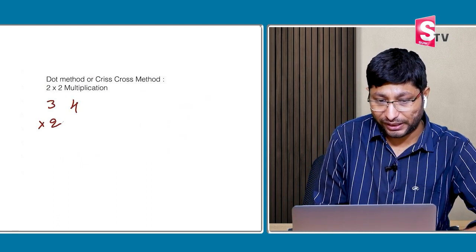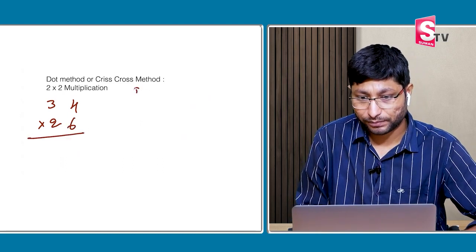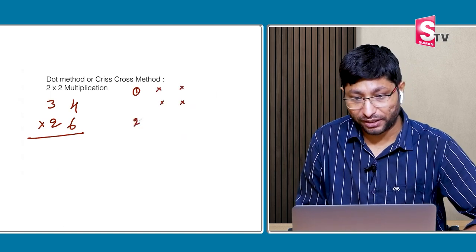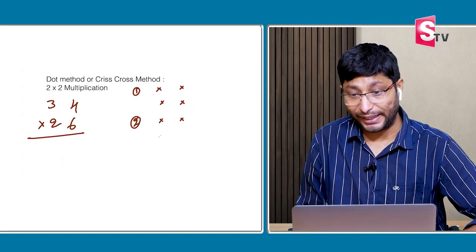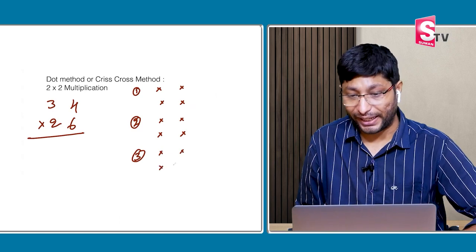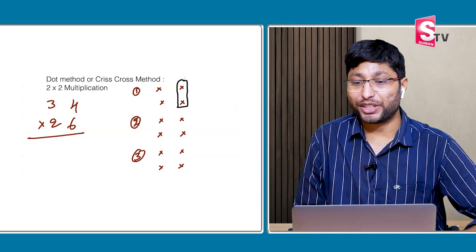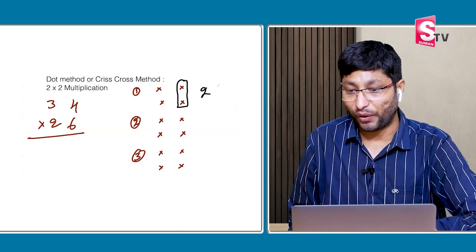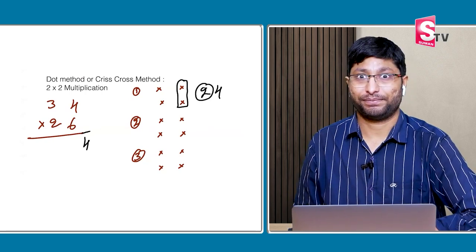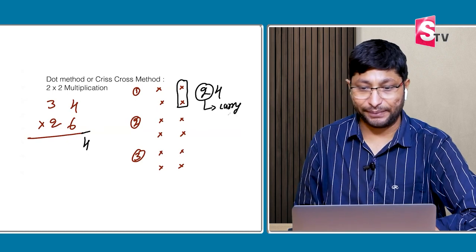Next question: 34 multiplied by 26. I will explain this problem also in steps. From the next problem onwards I won't write any steps on the board — please copy the steps for better understanding. Step 1: multiply units place into units place — 4 sixes are 24. Write down the 4, and 2 will be carry.